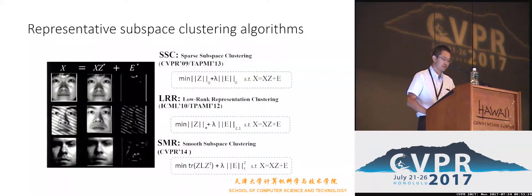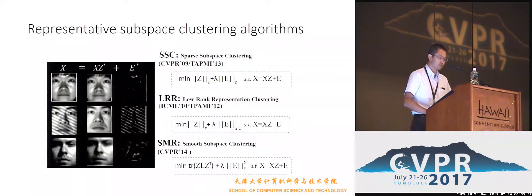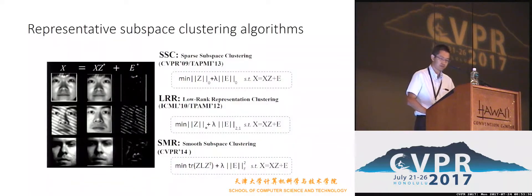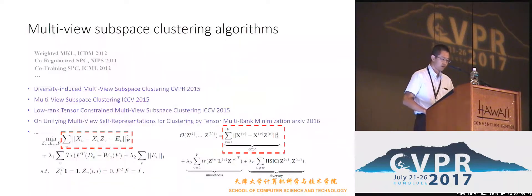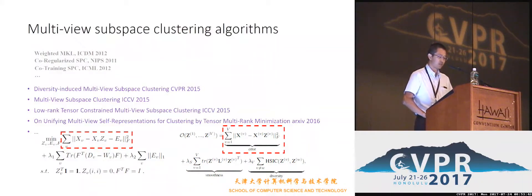There are several representative single-view subspace clustering methods. The key difference is the regularization terms for the self-representation matrix, including sparse, low-rank, and smooth regularization. Recently, based on these single-view methods, several multi-view subspace clustering methods have been proposed.